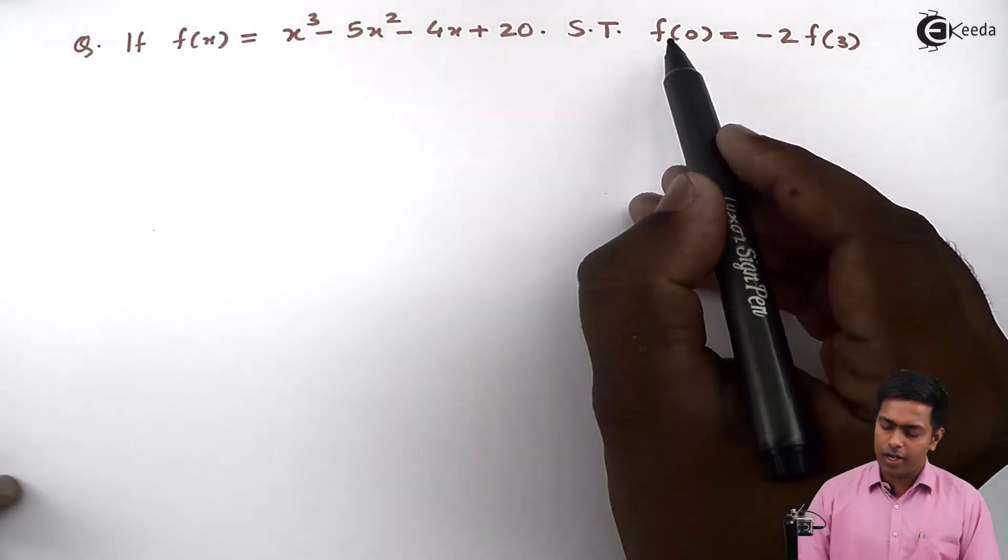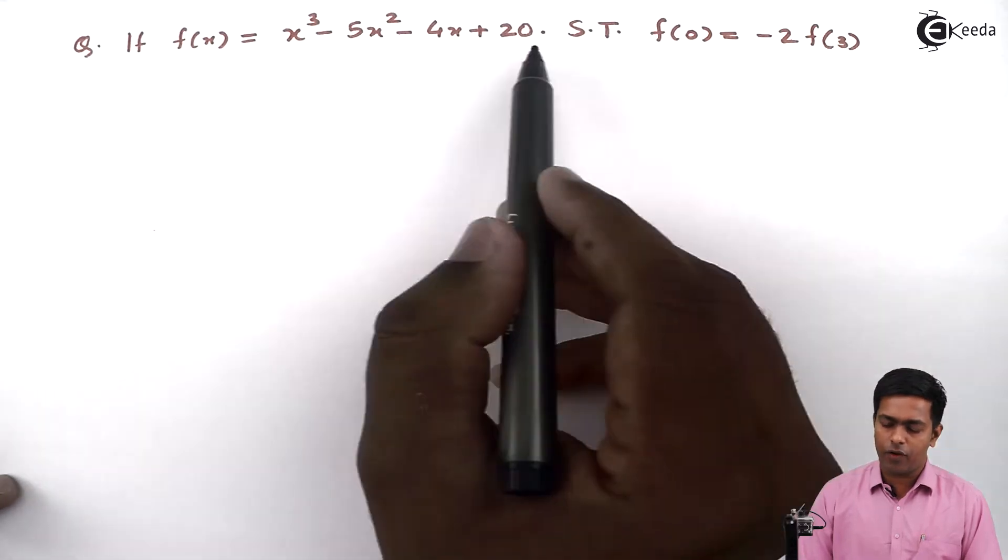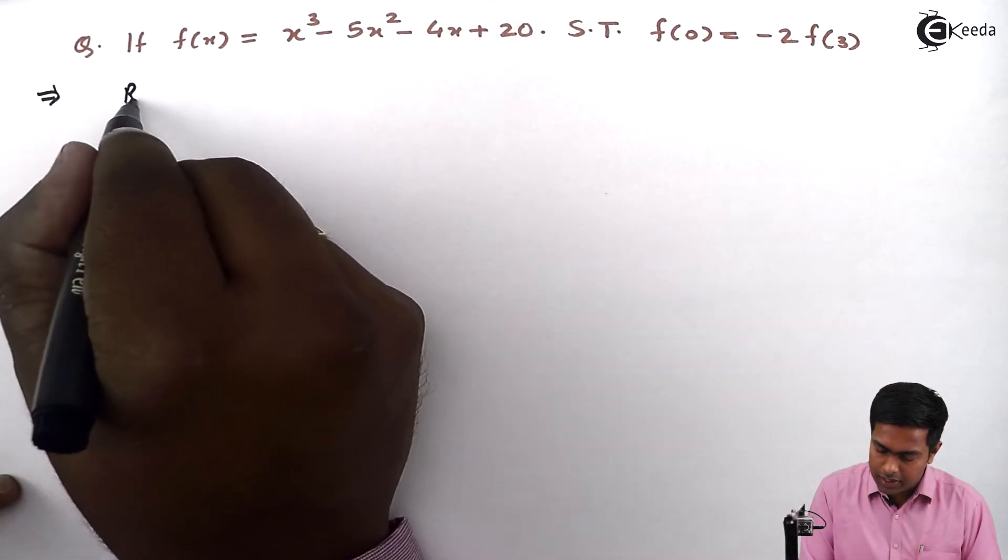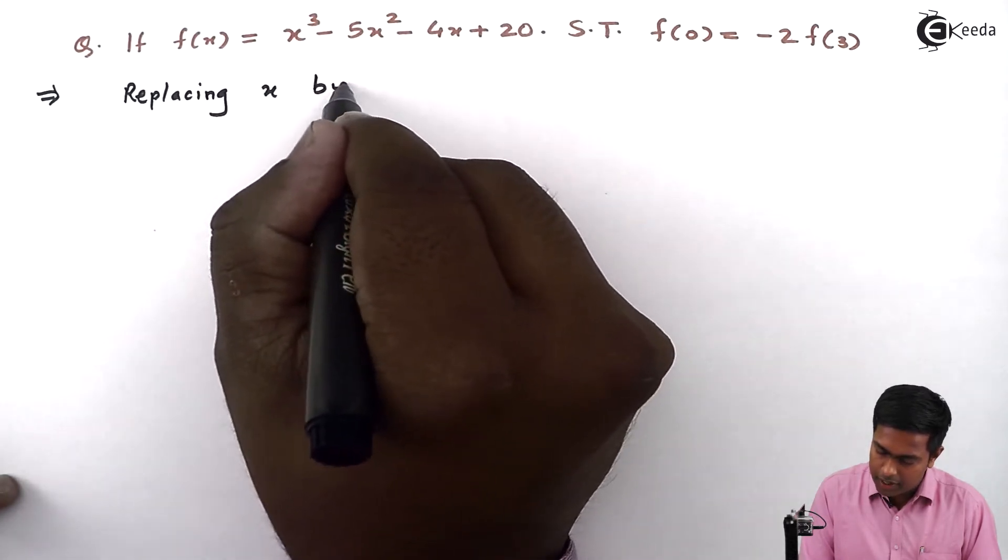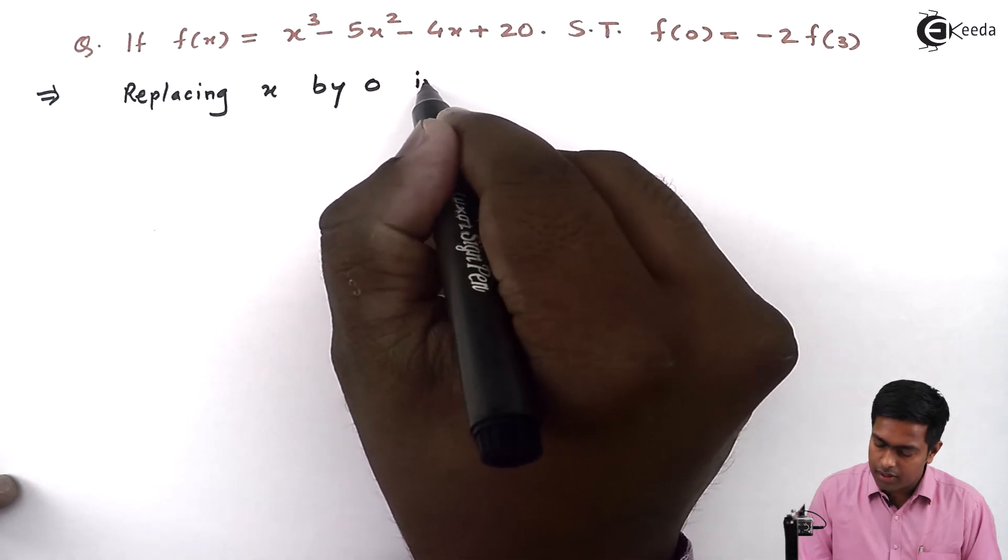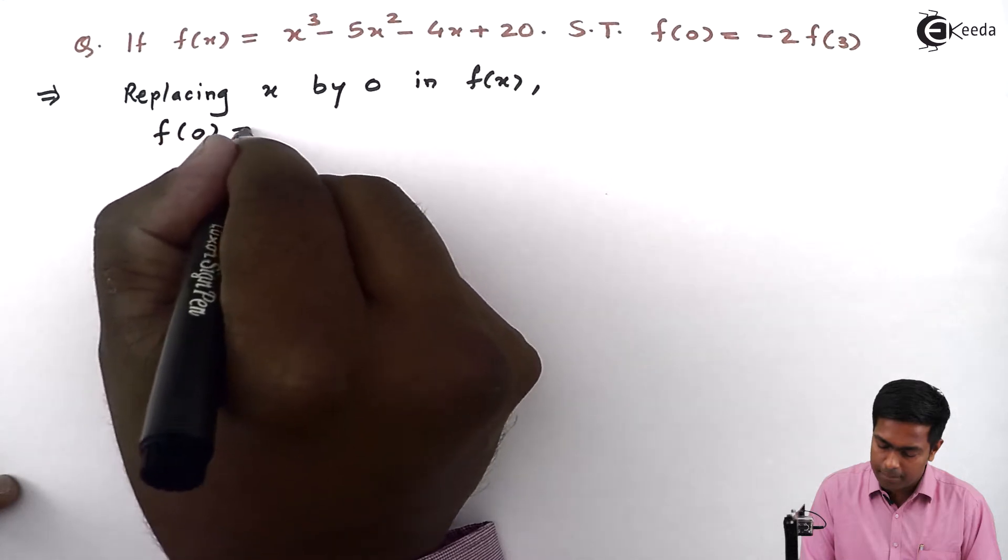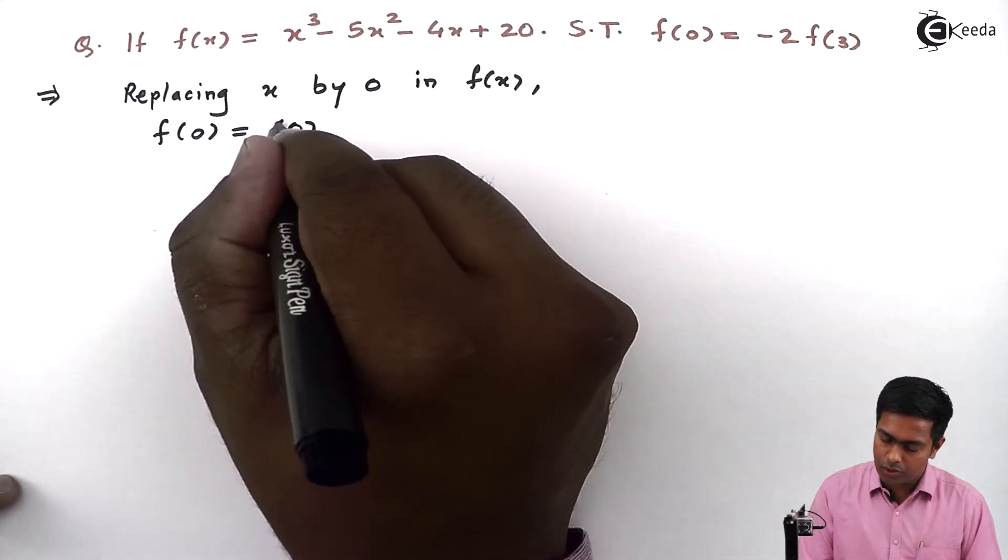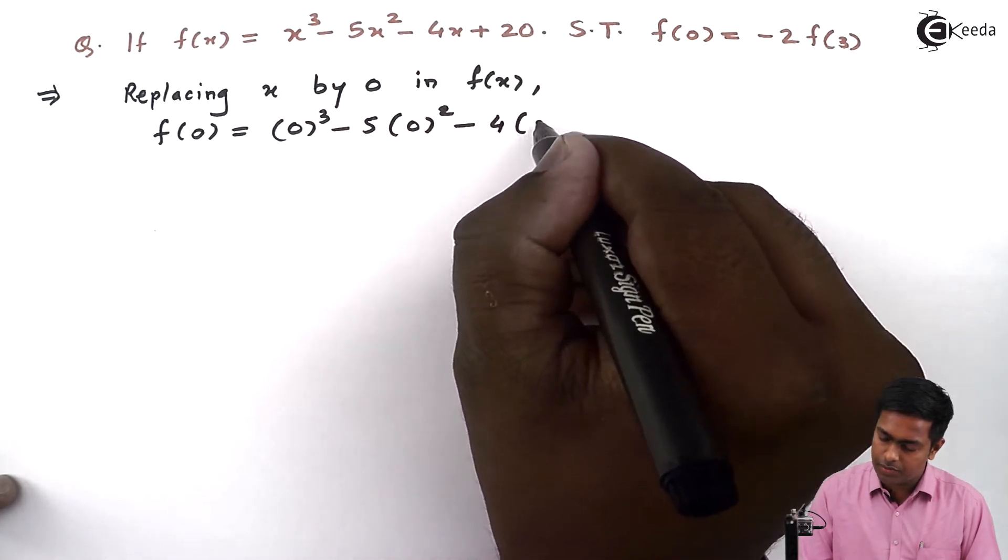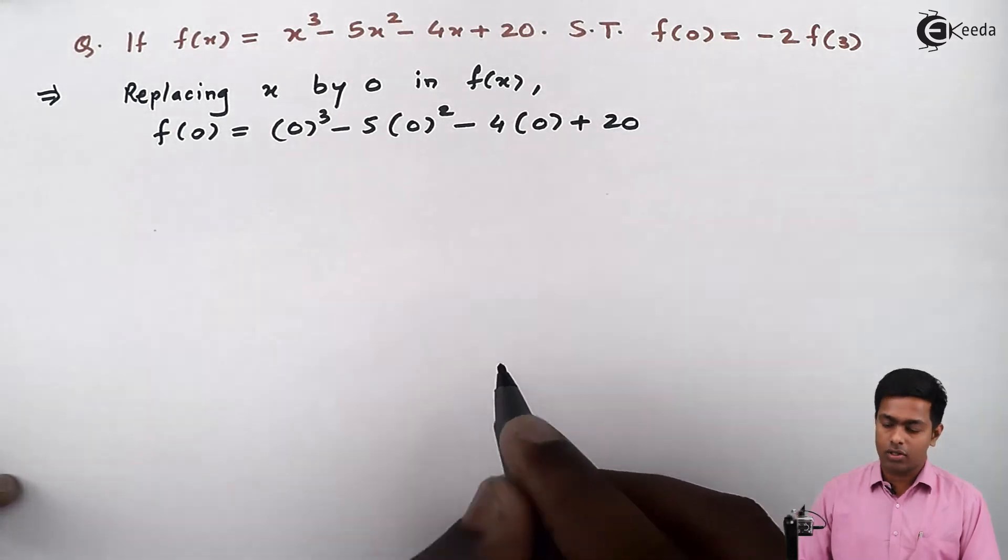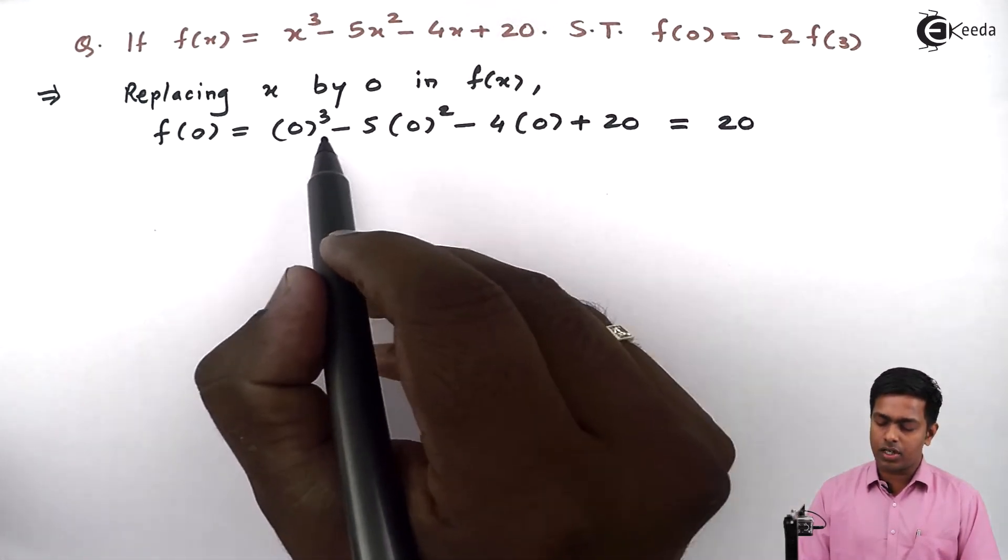So to find out the value of f(0), I'll replace x by 0 in f(x). So here I'll write replacing x by 0 in f(x). So this will give us f(0) = 0³ - 5(0)² - 4(0) + 20. So this term will give us only 20 because the first three terms will give us 0.